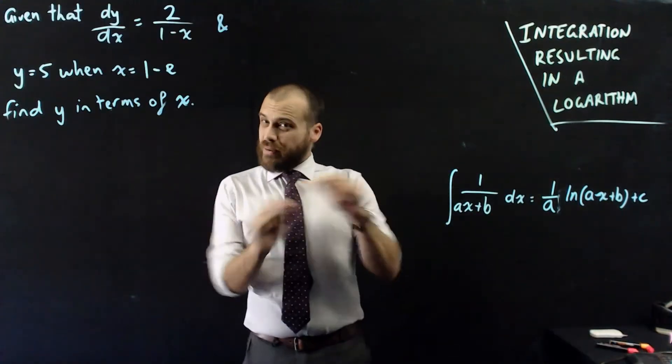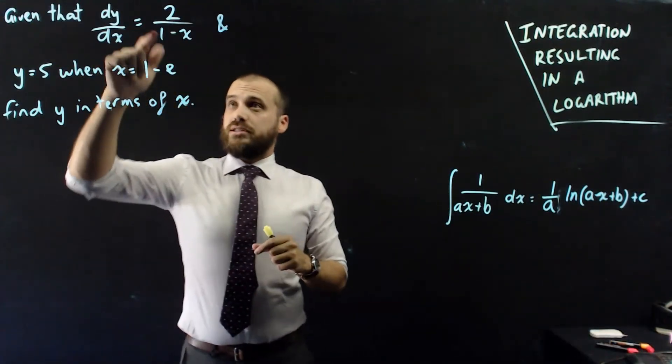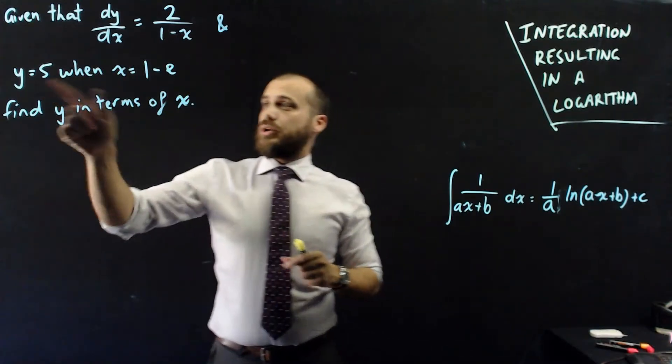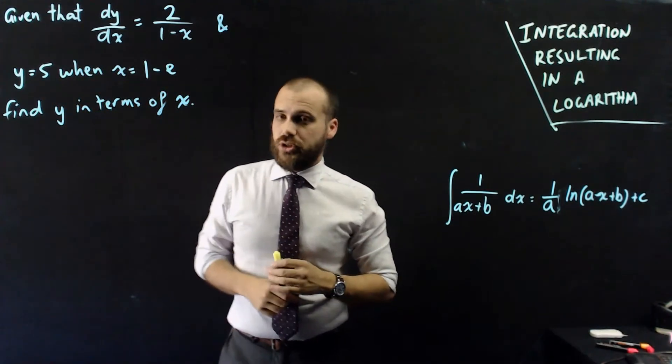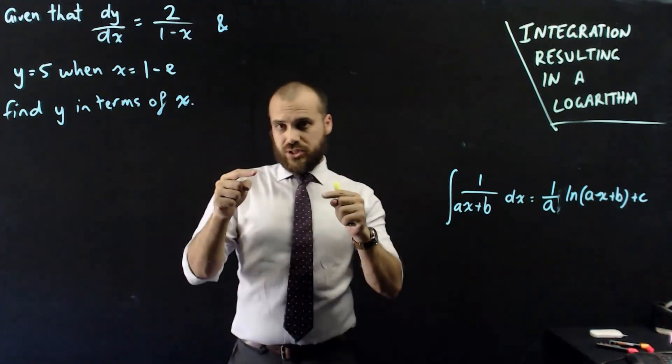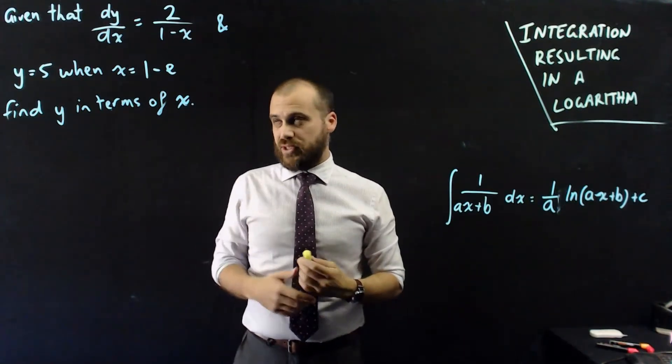This video is short, so let's do one more little thing with it. Given that dy dx equals 2 on 1 minus x, and y equals 5 when x equals 1 minus e, find y in terms of x. So, this is one of those questions where we're trying to get rid of the plus c once we've integrated something.